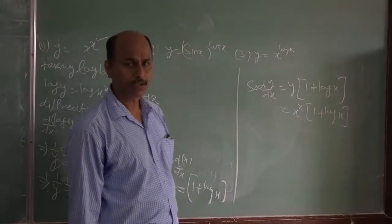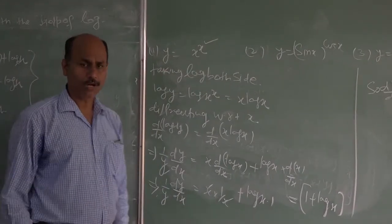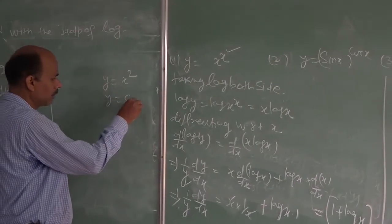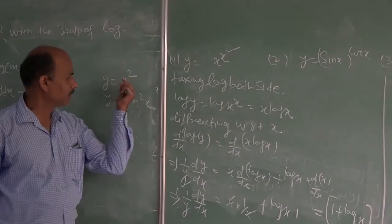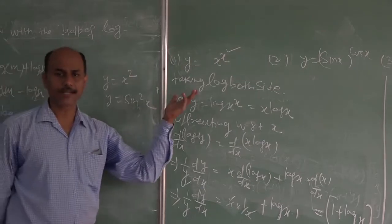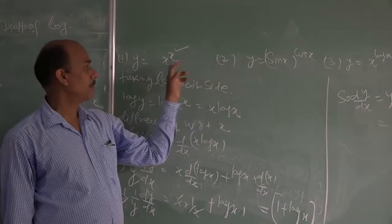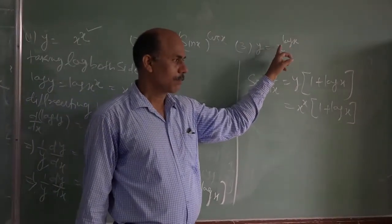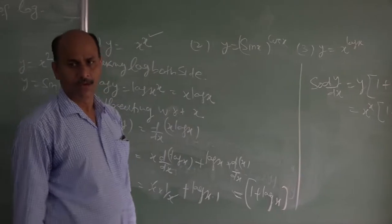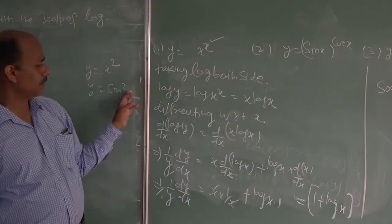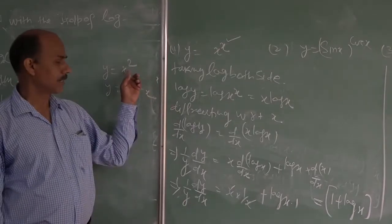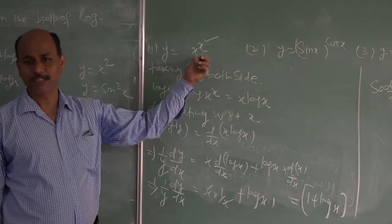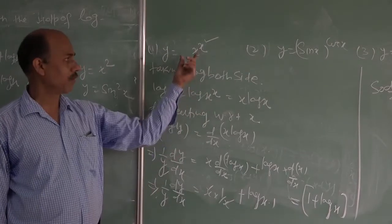Earlier, in most questions, the value of the power was given as a constant — like y = x² or y = sin²(x). Variables raised to a constant power. This is the first time in differentiation where the power of the variable is itself a variable. So when the power of the variable is given as a variable, the standard differentiation format cannot be used — you have to think of something different.